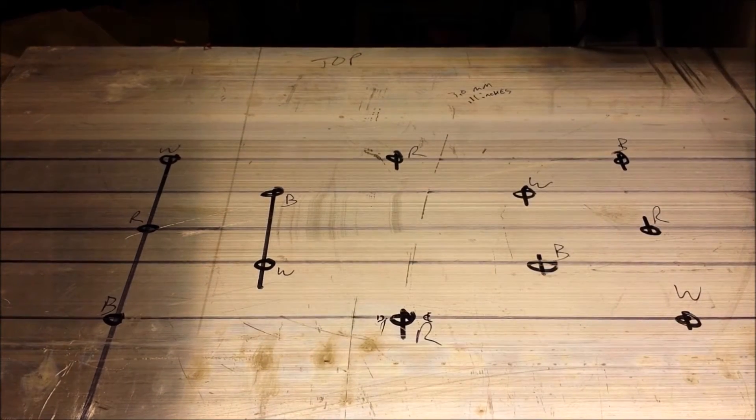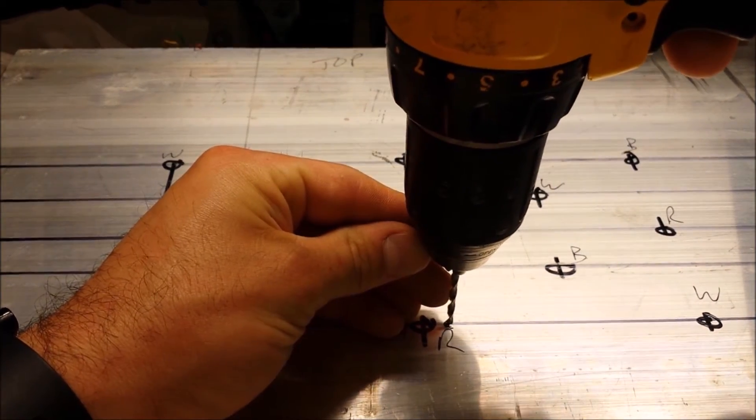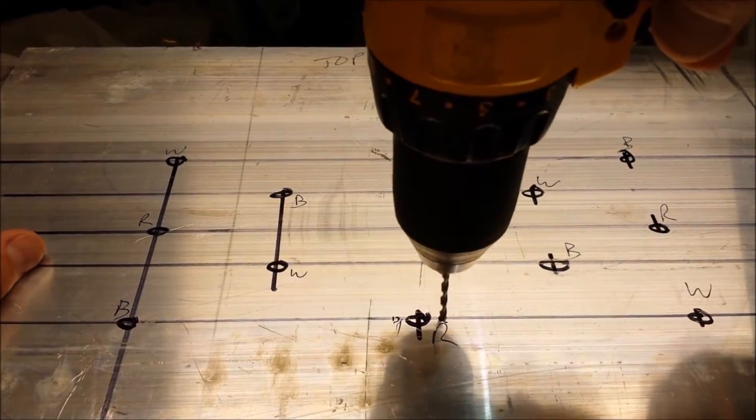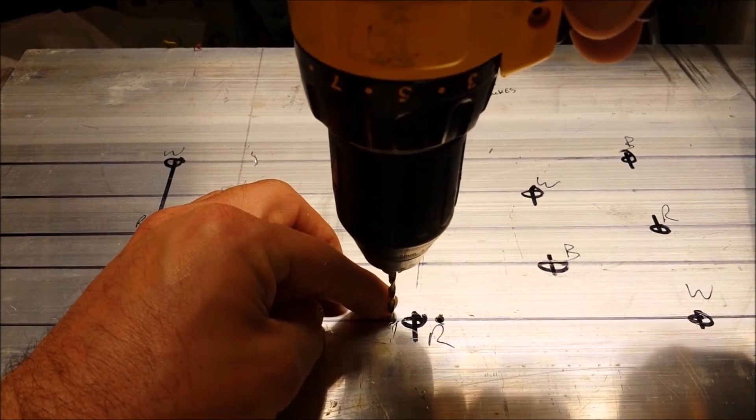Then you take a three millimeter or 0.11 inch bit and you drill this hole. Now, remember it's aluminum so you don't need much pressure.